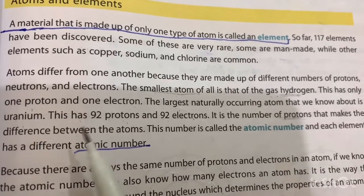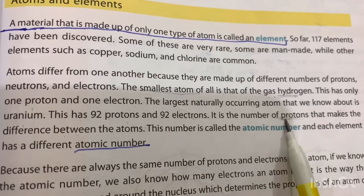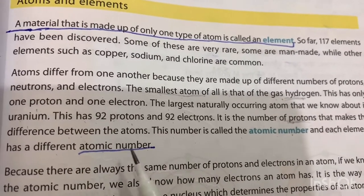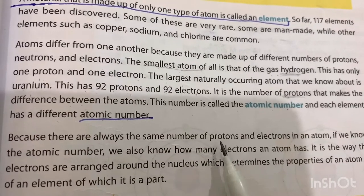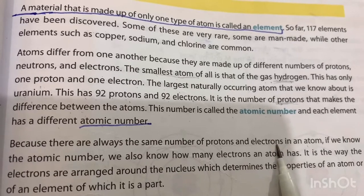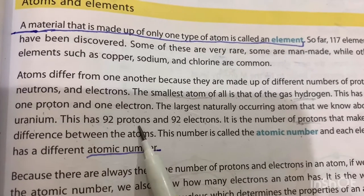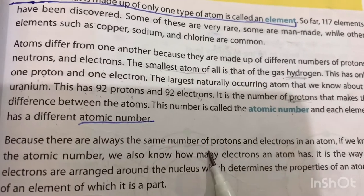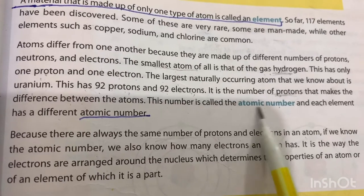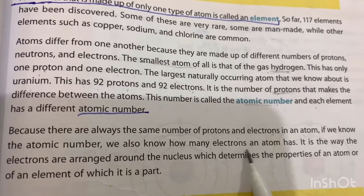The number of protons is what makes the difference between atoms. This number is called the atomic number, and each element has a different atomic number. There are always the same number of protons and electrons in an atom. In hydrogen, one proton means one electron; in uranium, 92 protons means 92 electrons. If we know the atomic number, we know how many electrons an atom has.